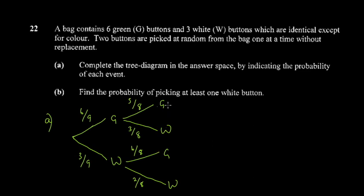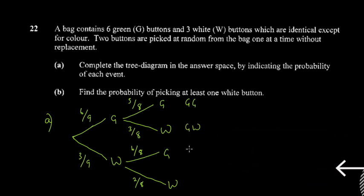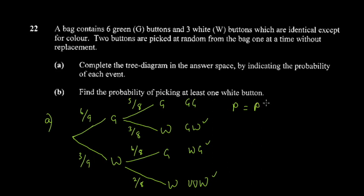You're asked to find the probability of picking at least one white button. The outcomes involving at least one white are: green-white (GW), white-green (WG), and white-white (WW). The probability is the sum of all three of these.